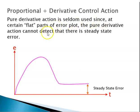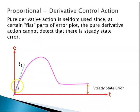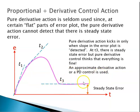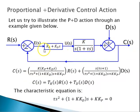Pure derivative action is very rarely used because in certain flat portions of the error plot, pure derivative action cannot detect that there is a steady-state error. For example, around point t3, the slope is zero, so derivative action cannot detect the error. Because of this reason, pure derivative action is seldom used. Instead, a small proportional action is used along with derivative action — that is, proportional-derivative (PD) control.